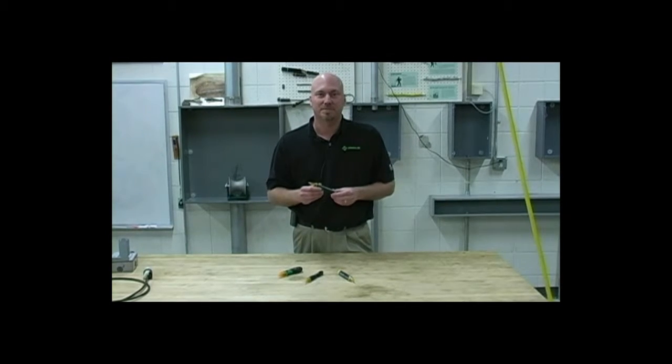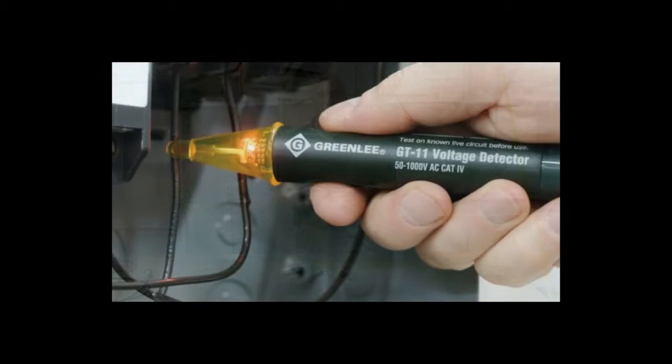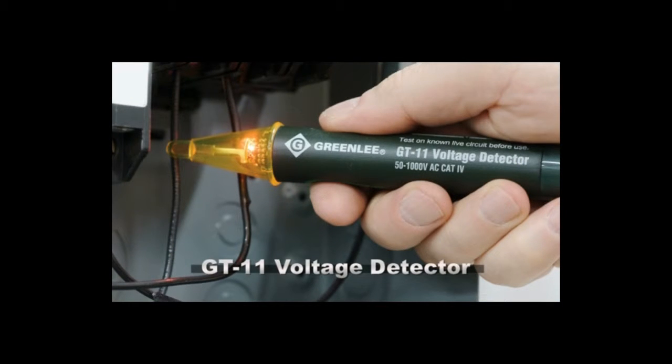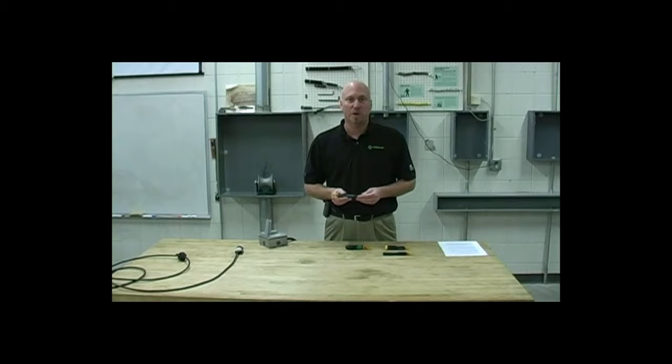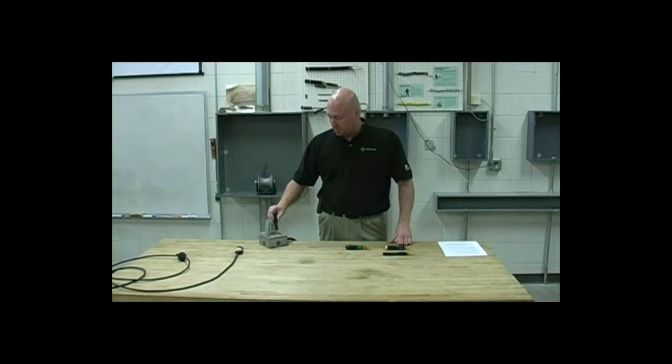This is the GT11. The GT11 is a Category 4 1,000 volt rated non-contact voltage detection tester. This tool operates as low as 50 volts and signals the user of AC voltage with intermittent lights and a tone.